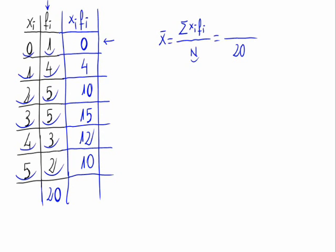So the summation of x sub i times f sub i is equal to 51, and that would be the numerator.